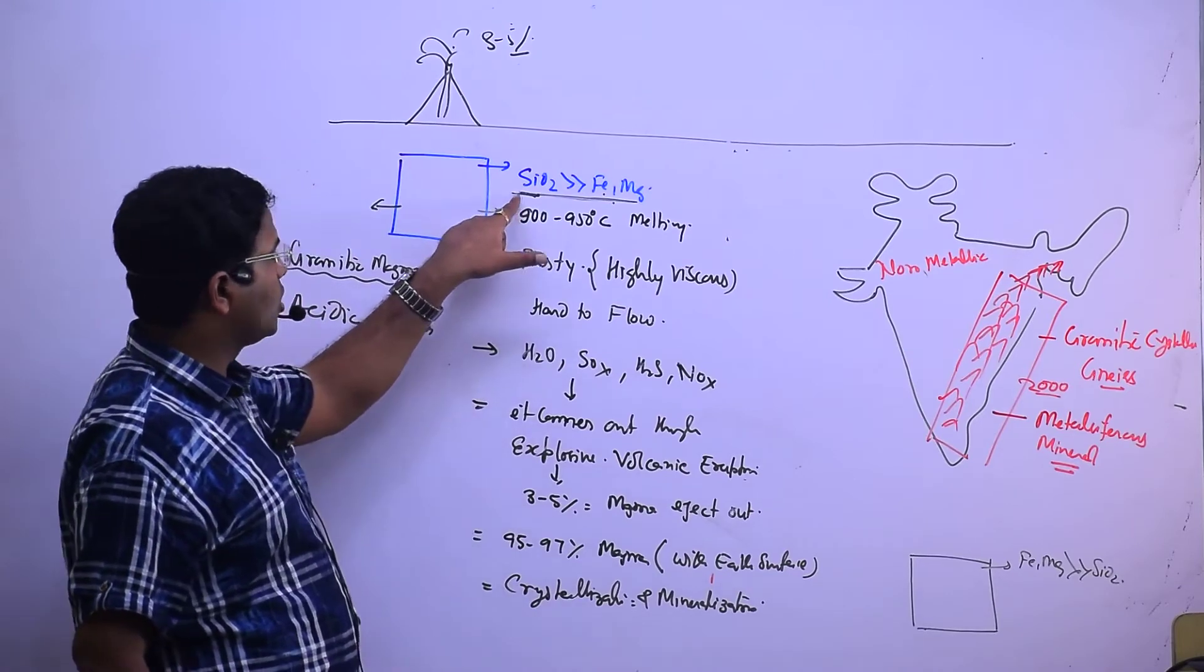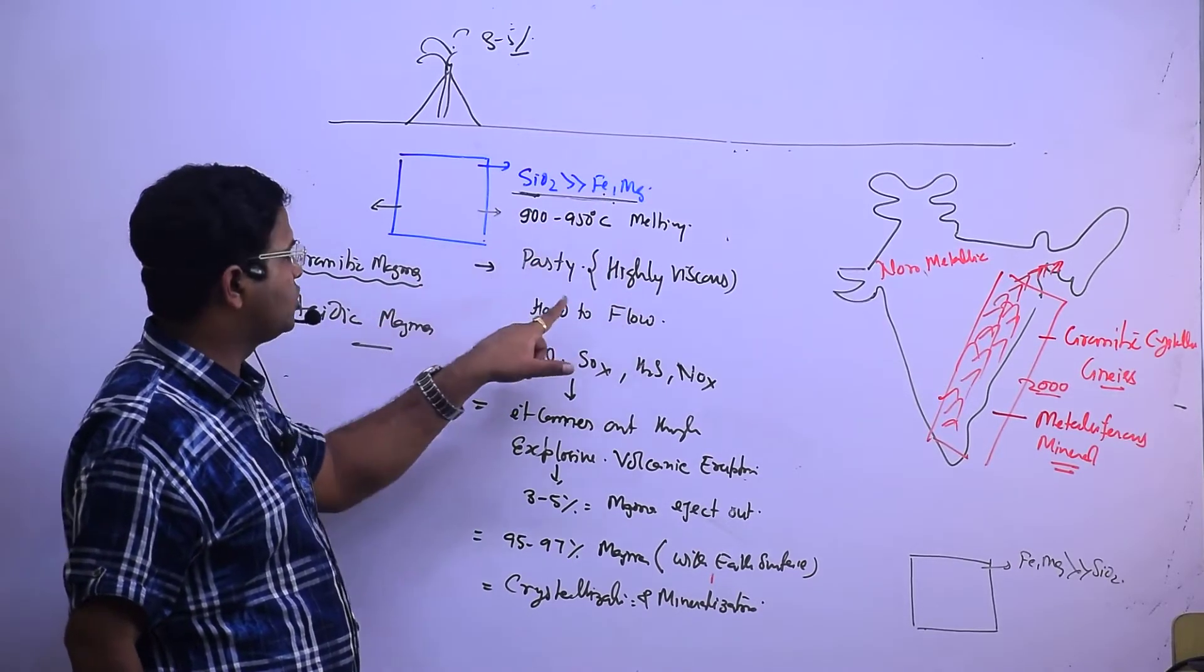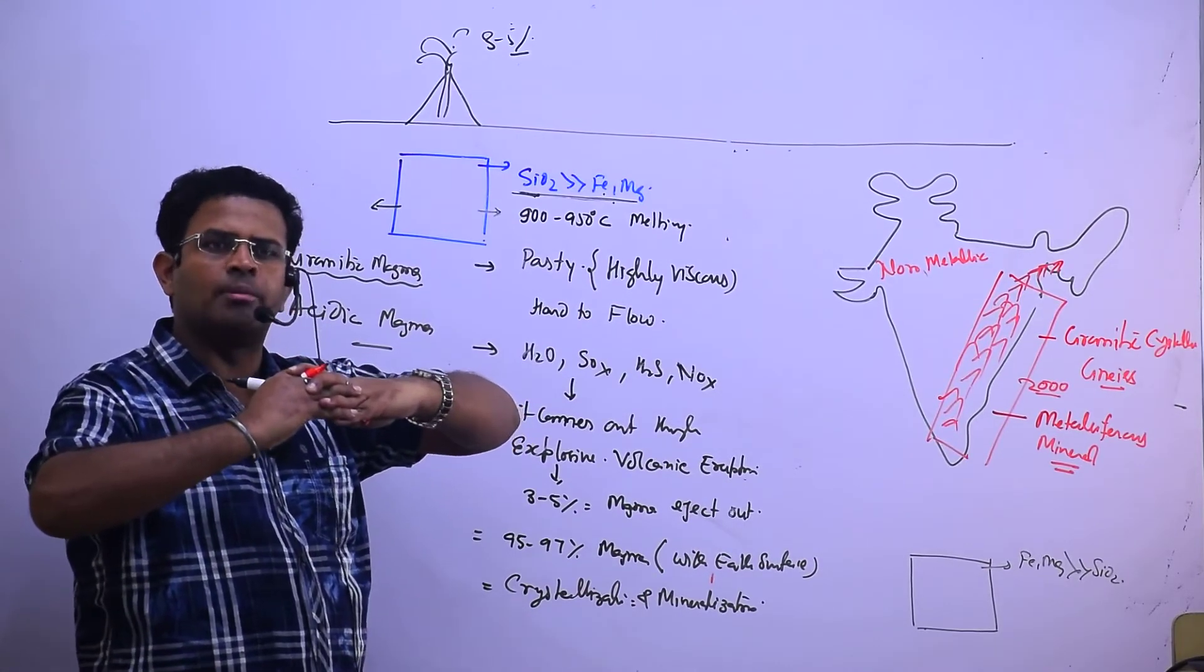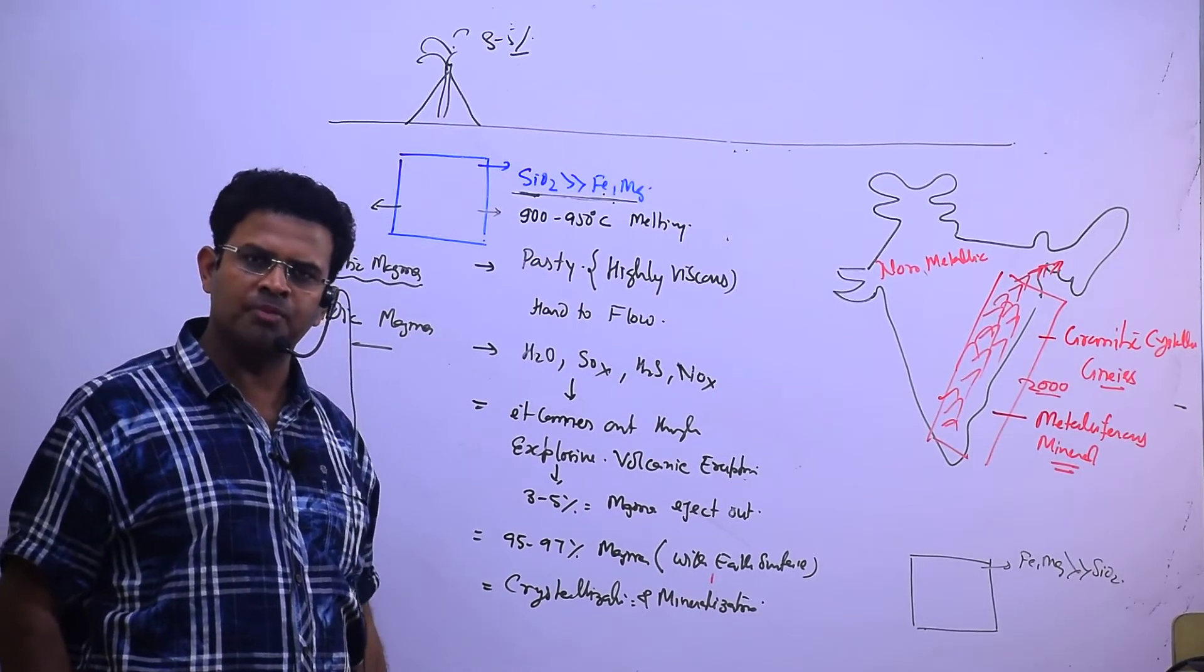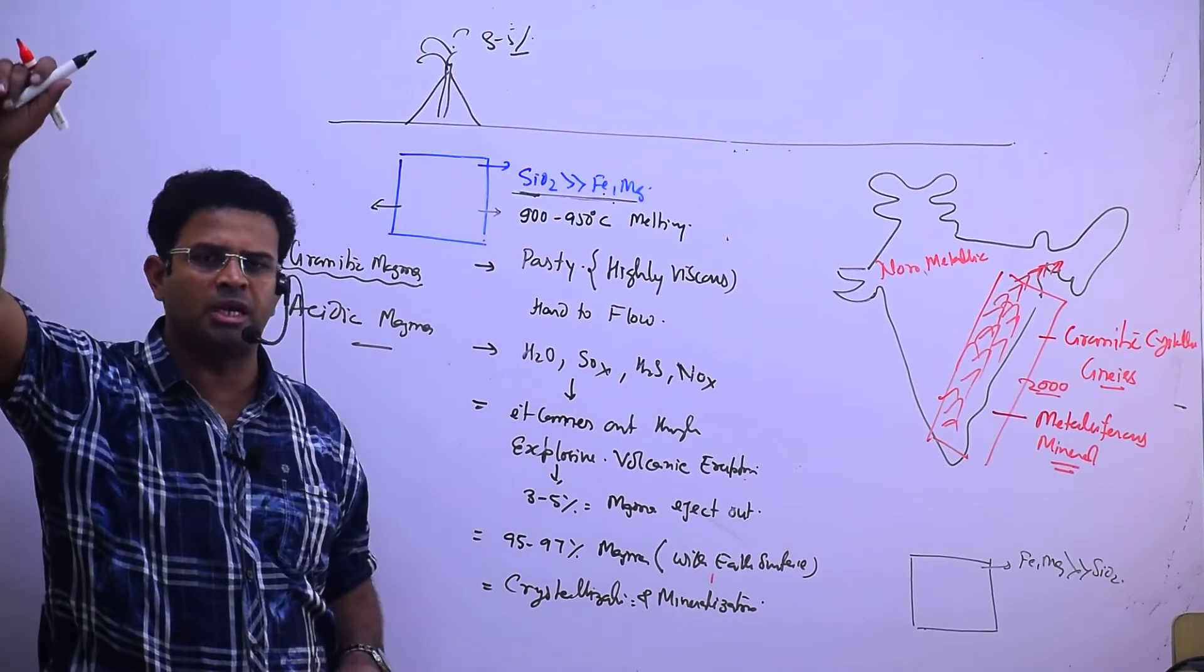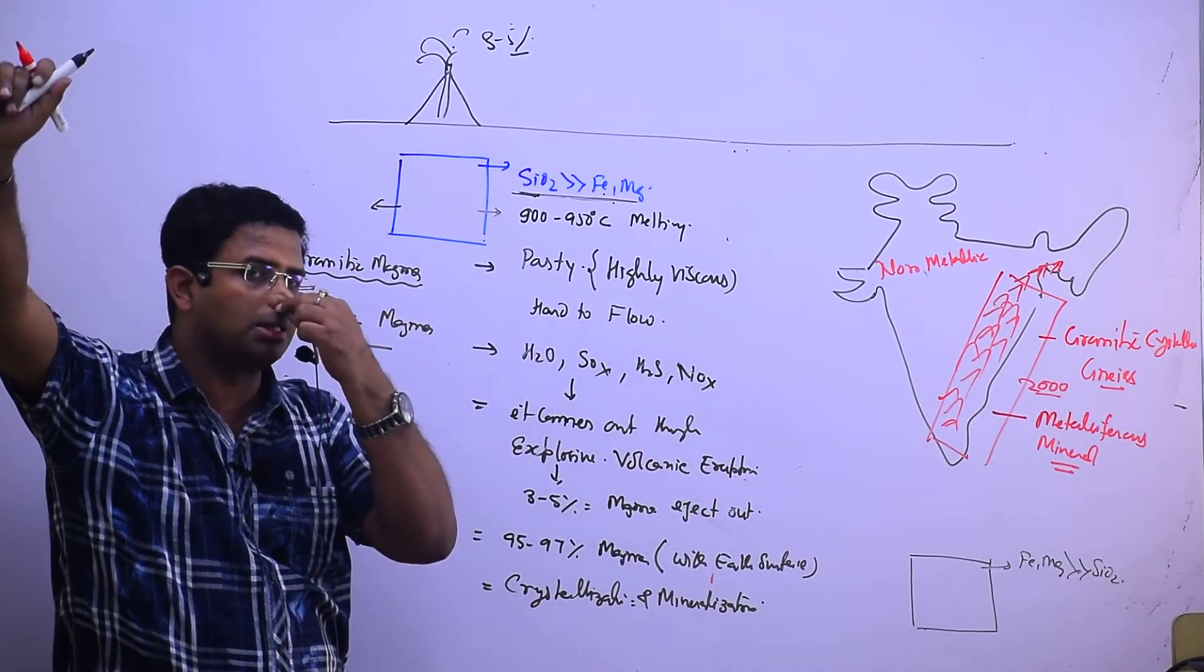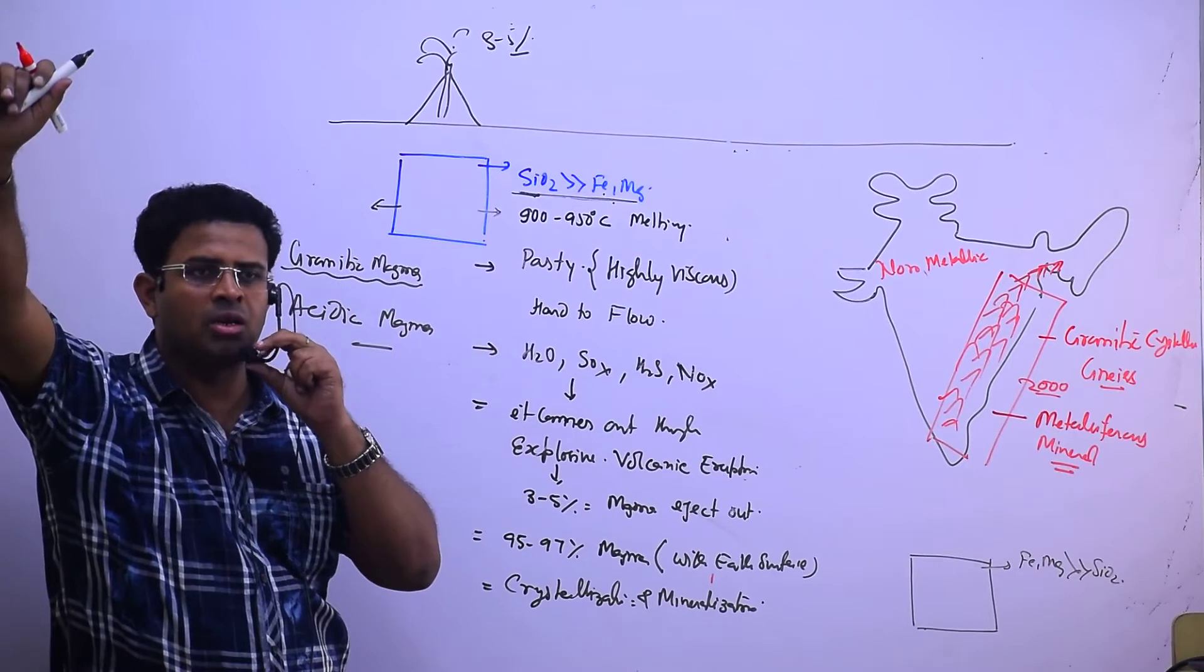Shall I move ahead? So granitic rock - granitic rock where the silica and ferrous magnesium is more. Silica is more than ferrous magnesium. 900 to 950 there is a temperature. Pasty, highly viscous - means hard to flow. And which one is causing explosive volcanic eruption? Strong nature will not cause. Strong nature is giving an intermolecular bonding. But isostatic, who wants to come out? Gaseous pressure. Both are contributing in the explosive volcanic eruption. And how much it comes out? 3 to 5 portion. It means most of the granitic magma in the form of granitic rock remains within the earth's surface.